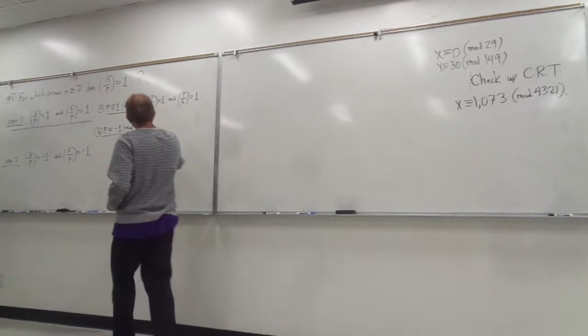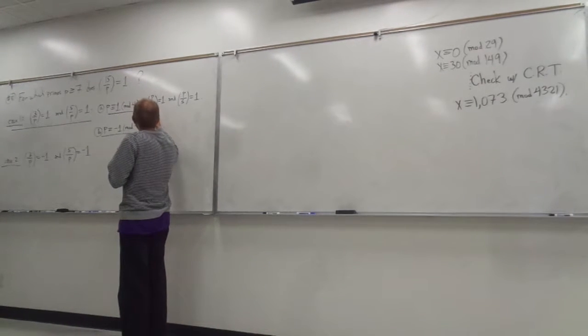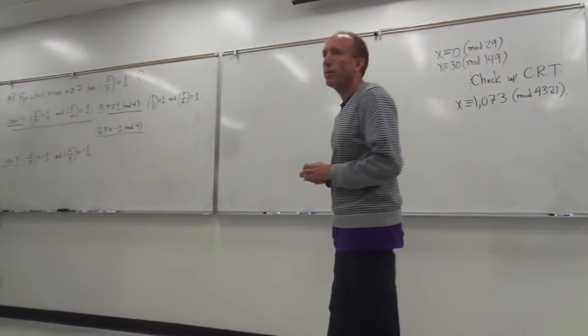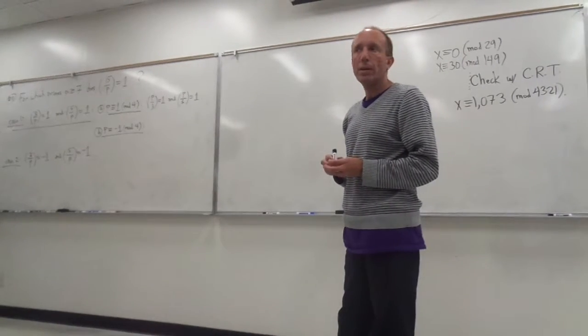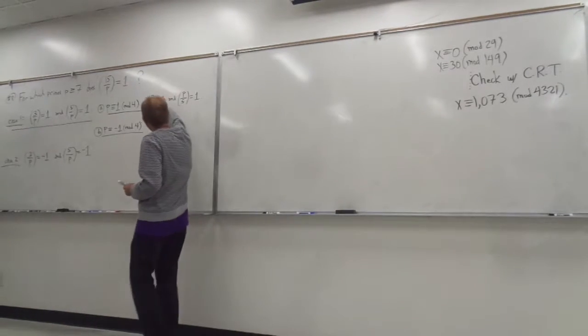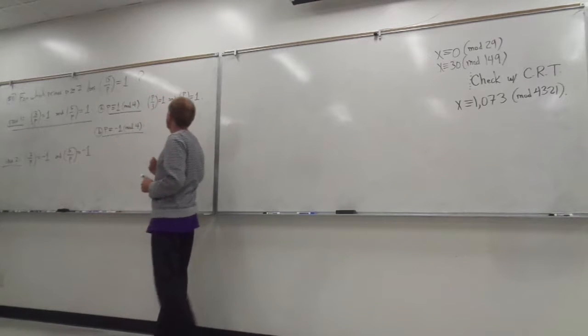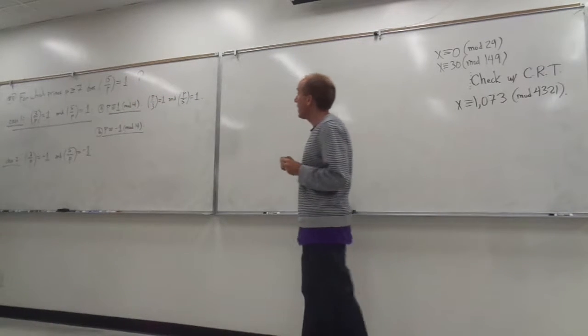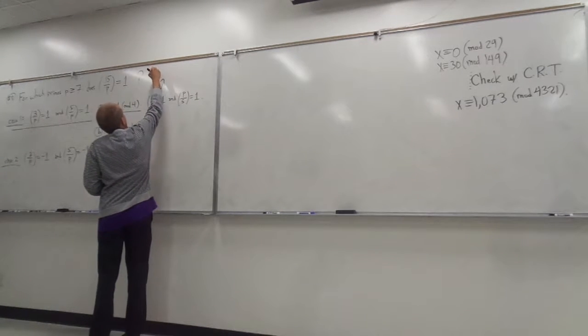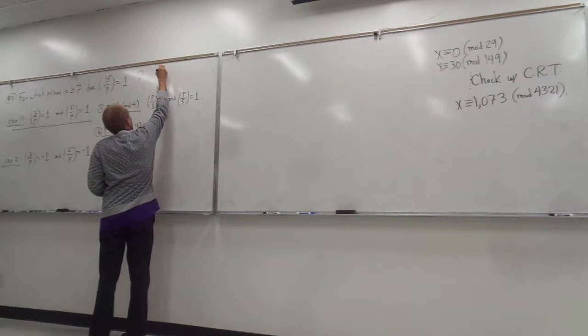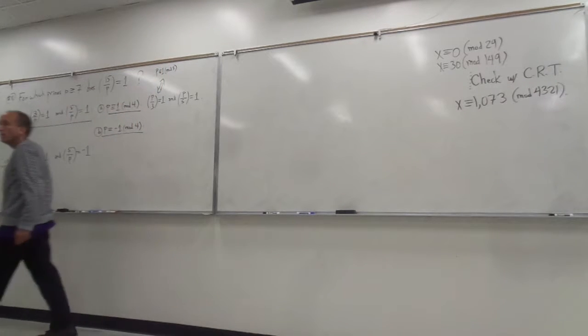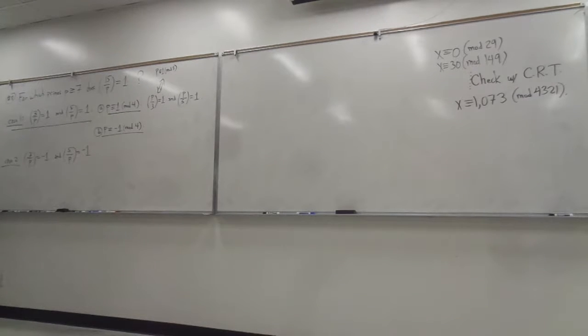So essentially, everything is a perfect square in mod 3, right? Except for zero. One squared, I'm sorry, not everything. Everything can be squared, the results are just that you get a 1 out of that. So the p, what are we going to say here about this? This is if and only if p is congruent to 1 mod 3, right?